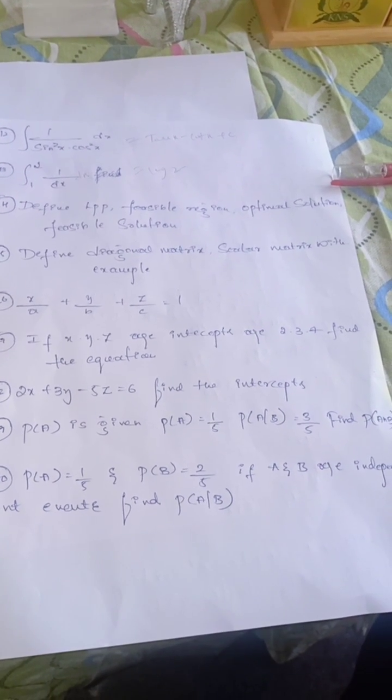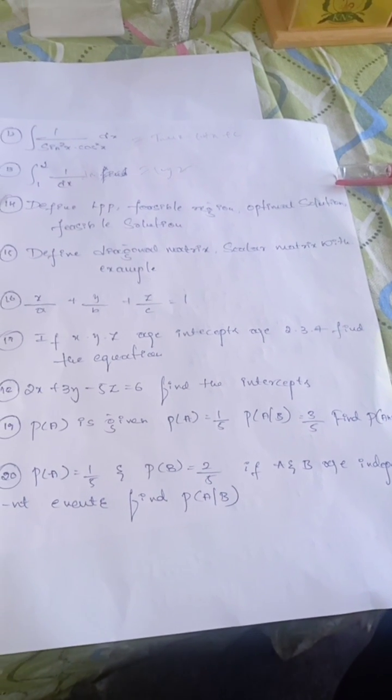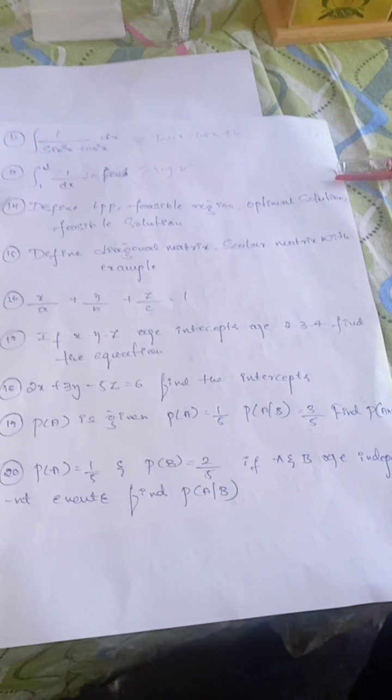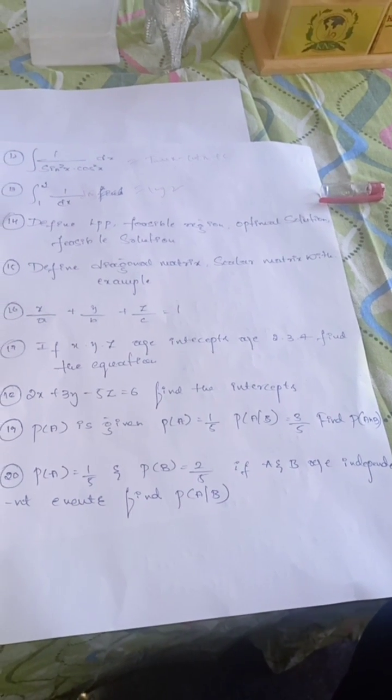In probability, P of A is given. P of A is 1/5, P of A given B is 3/5. P of B is not given, or if P and B are independent events, find P of A given B. It is nothing but P of A, that is 1/5.